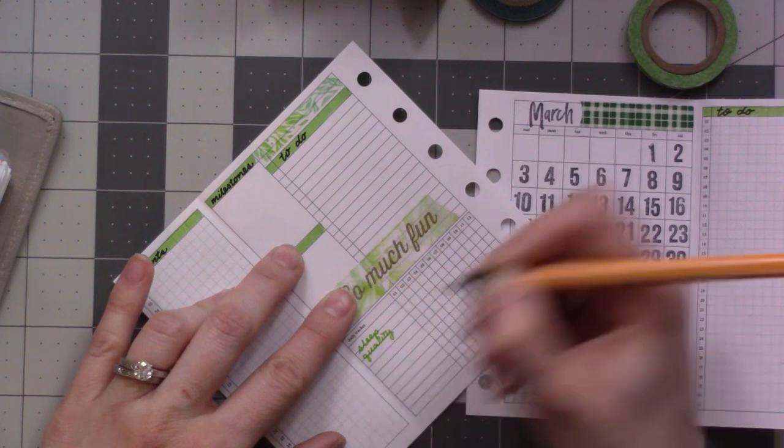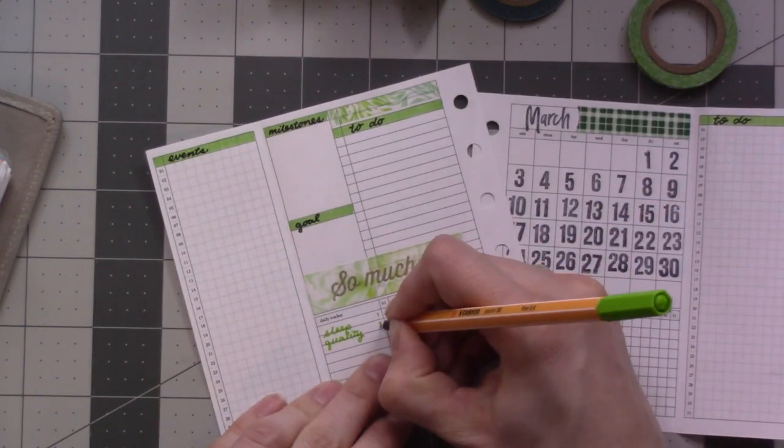But for now, anyway, events on the left and then the milestones or the baby milestones that she hits. It's just fun to keep track. And then the goal is my goal for the month, just sort of a resolution thing.